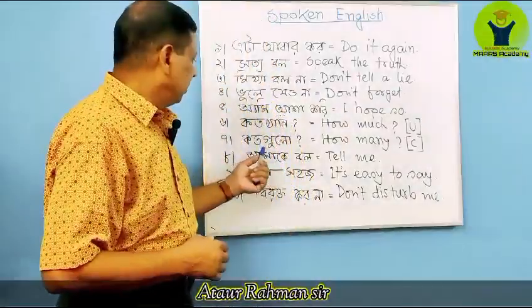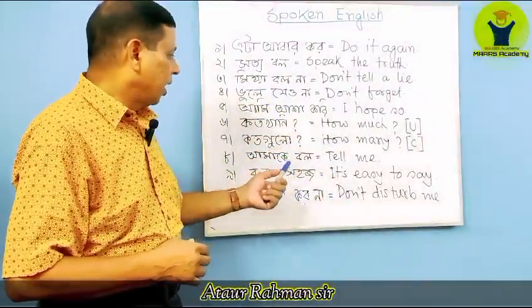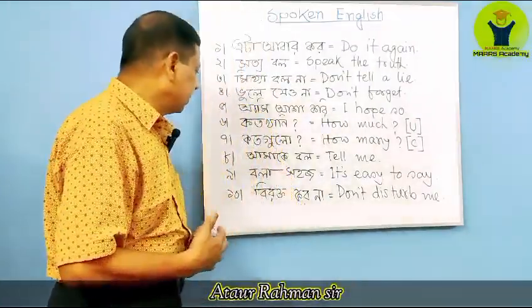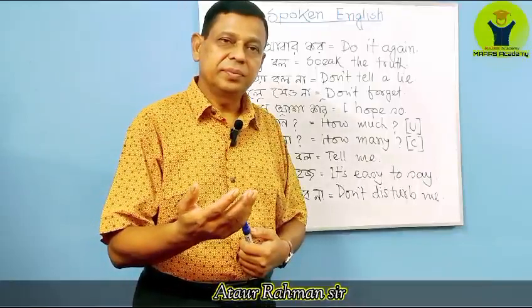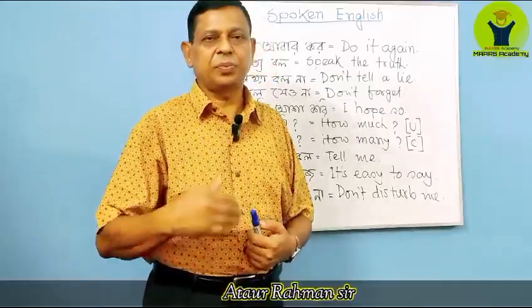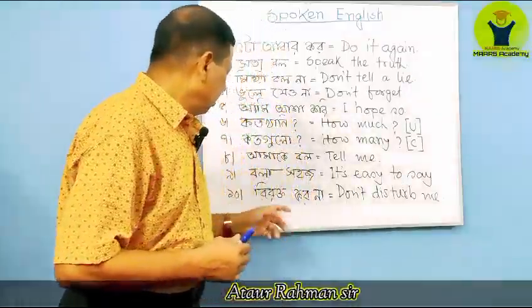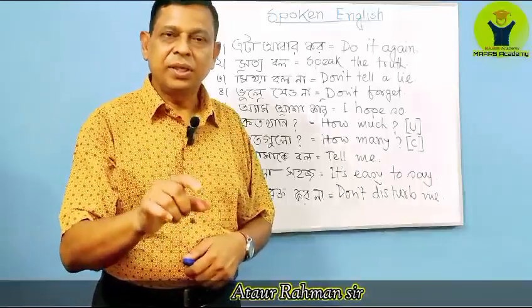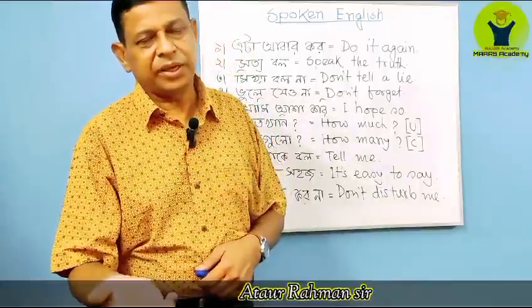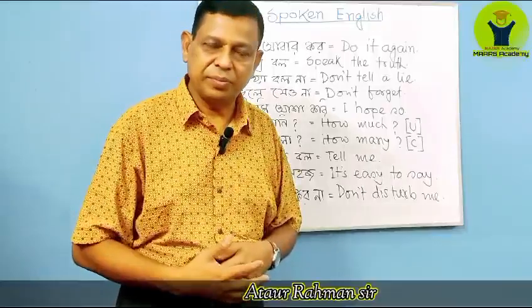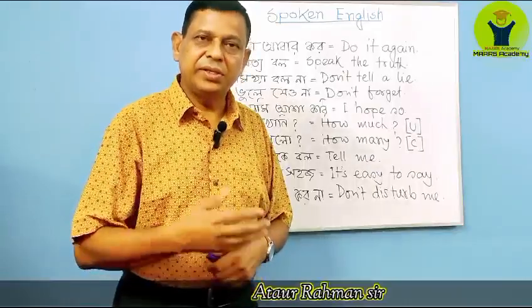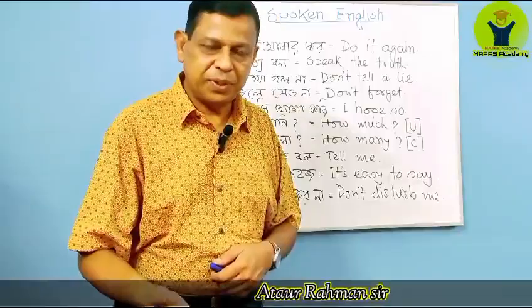'Kato khani' means how much, 'kato below' means how many. 'Amaki bolo' means tell me. 'Amaki iso' means come to me. 'Chalo akun jai' means let's go home now. 'Bola shahos' means it's easy to say, 'Kora shahos' means it's easy to do, and 'Kora shahos nai' means it's not easy to do. You can use a negative or affirmative sentence according to your requirement.